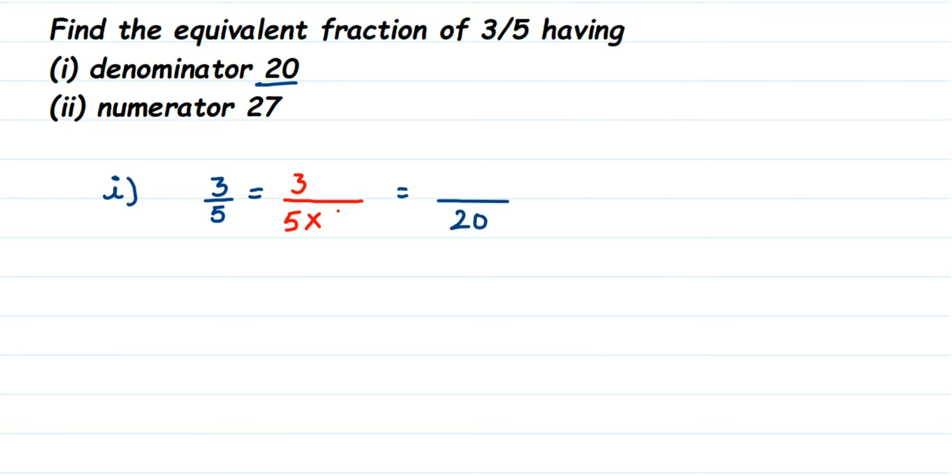So we should multiply 4 in the denominator, but whenever you are multiplying or doing any changes in denominator, you should do it in the numerator too, because if you change only denominator, the value of the number will change. So whatever modification you are doing, do it in the numerator and in the denominator. So I am multiplying 4 in the denominator, so multiply this in the numerator.